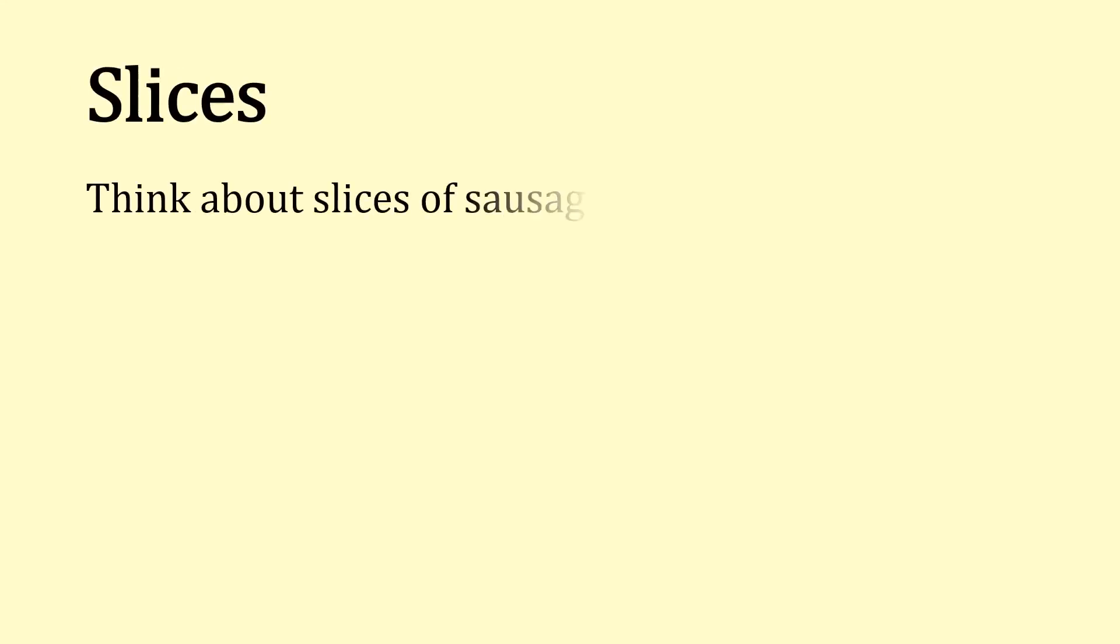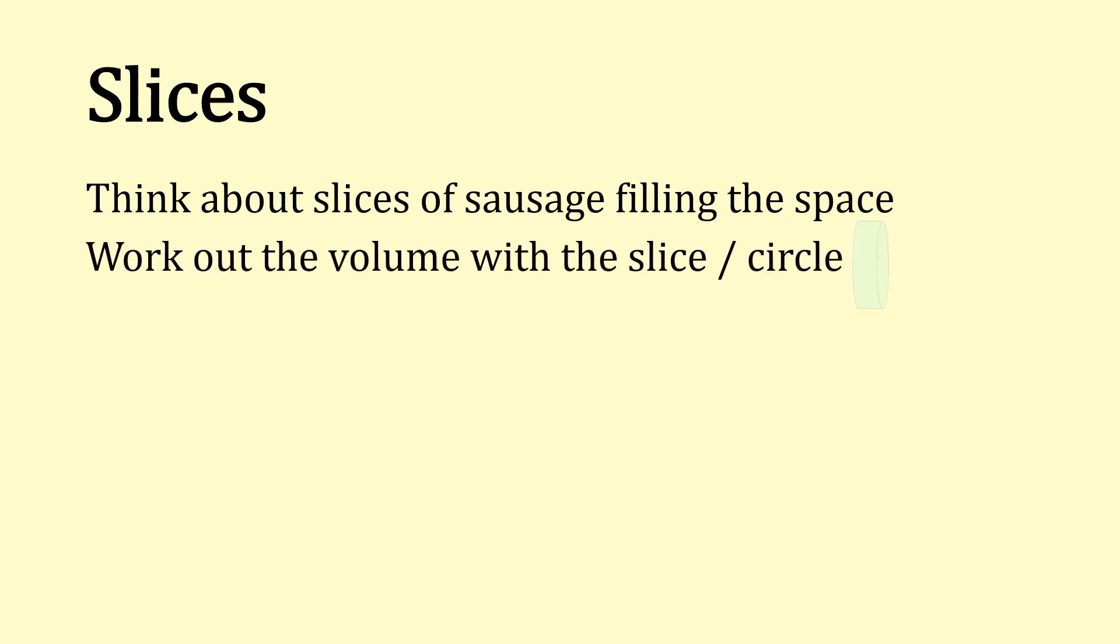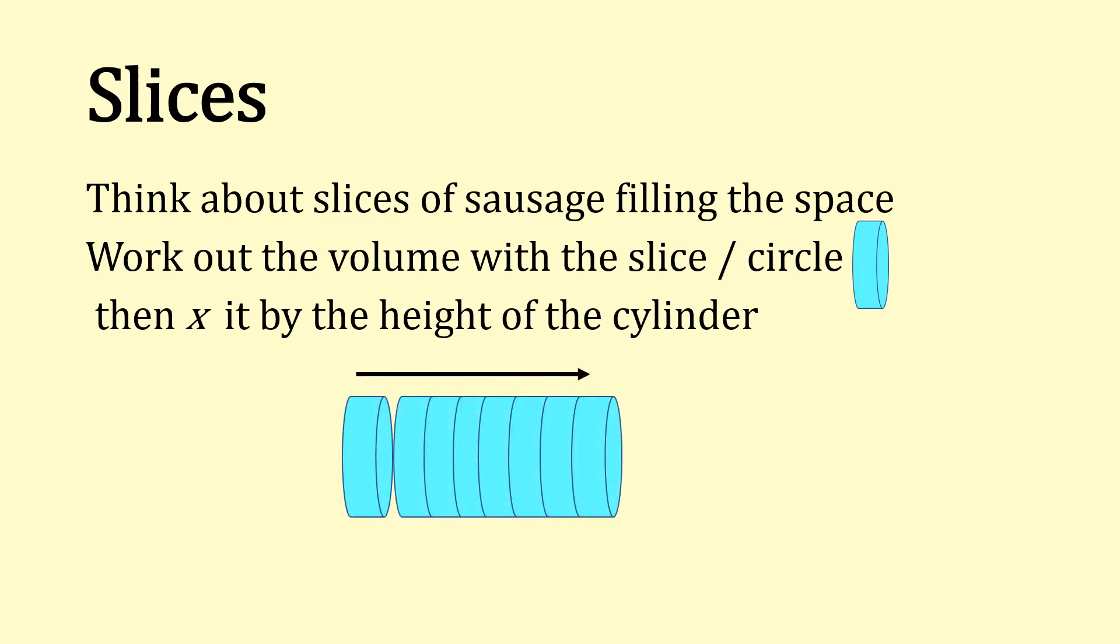Slices. Think about slices of sausage filling the space. We're going to work out the volume using this. Then we're going to times that by the height of the cylinder.